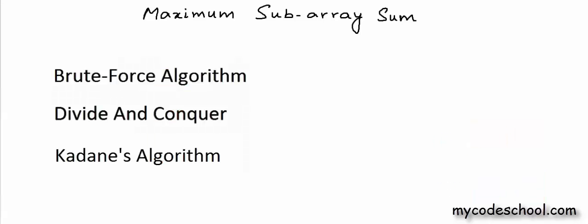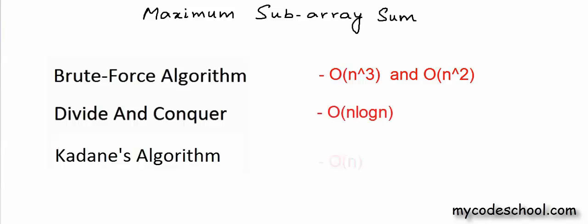Having a quick recap, we saw four approaches: the first was an O(n³) approach where we considered all different possible subarrays and took the maximum. We later improvised it with an O(n²) approach. Then we used the divide and conquer technique to arrive at an O(n log n) solution. And finally, we saw Kadane's algorithm which runs in O(n). All the code shown in this video tutorial will be available on GitHub — the links will be posted in the video description. Thank you.